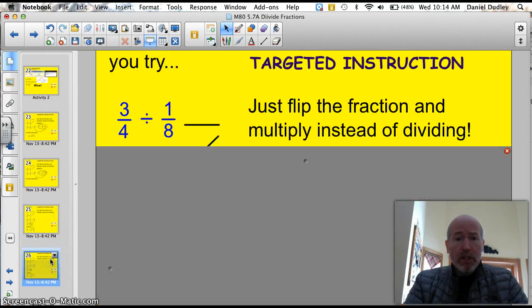Time for you to try fractions. How about this one? 3 fourths divided by 1 eighth. Just flip the dumb fraction and multiply instead of dividing. Go.